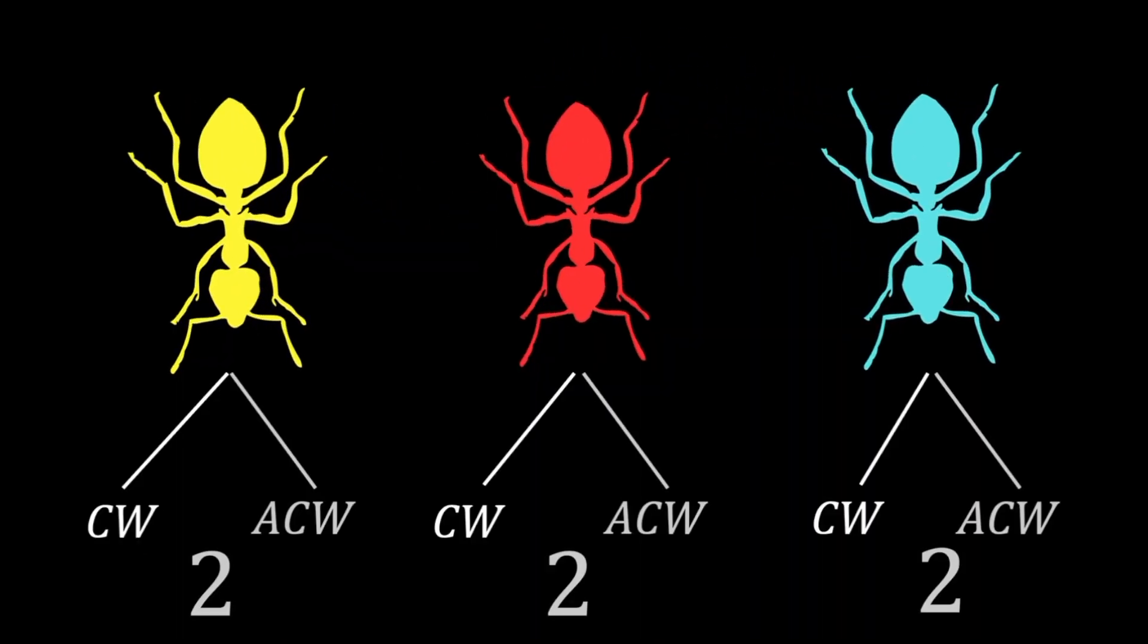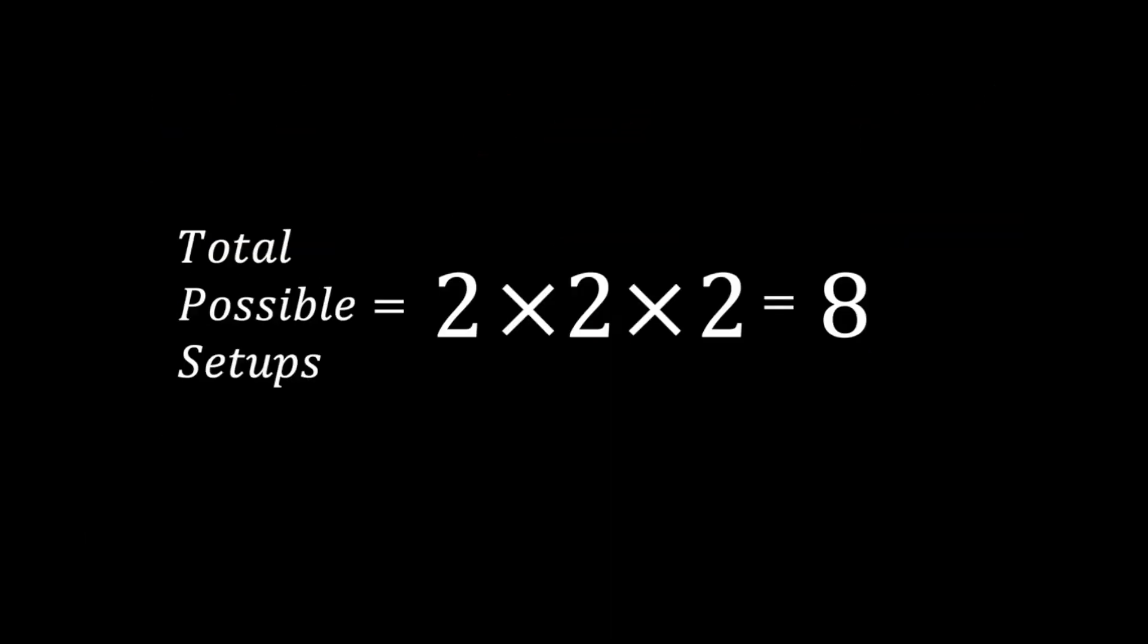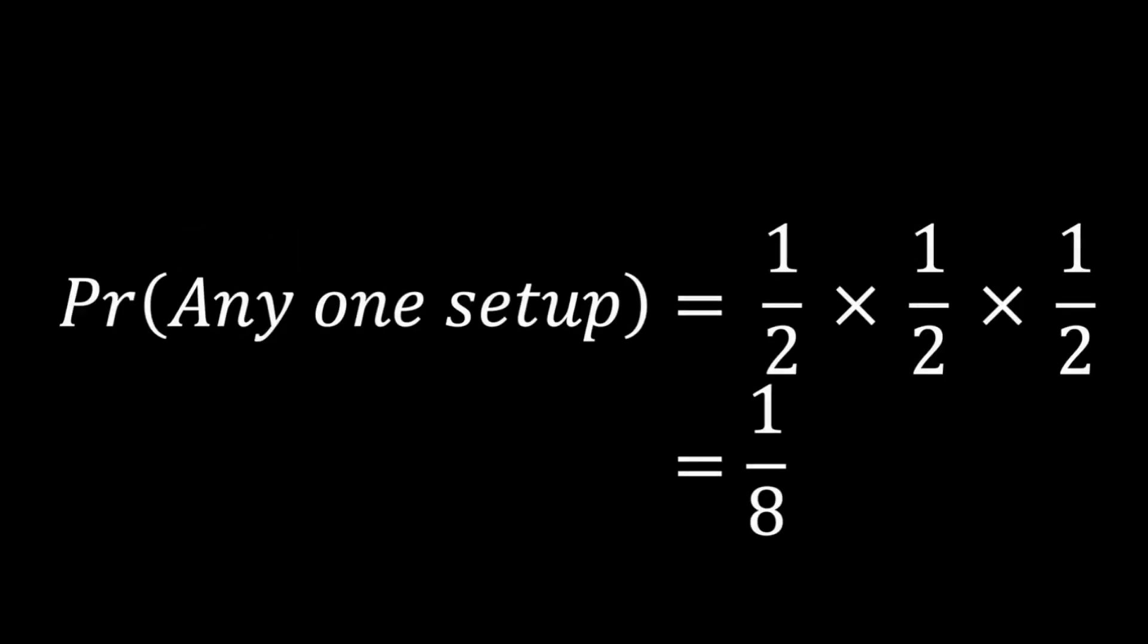Since there are three ants, each with binary choices, this gives a total of eight possible setups, where each setup is a permutation of moves by the ants. The probability of any one setup is the same: 1 over 8.